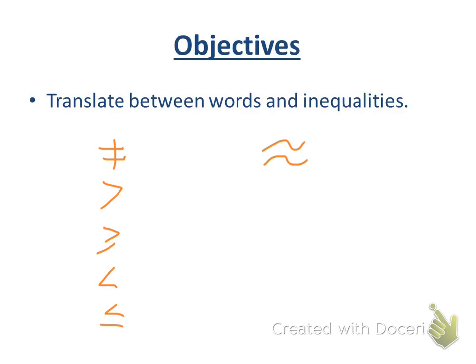So the inequality symbols that we're going to be working with, this is just going to be translating between words and inequality. What are some words that could be used to interpret that symbol? Not equal to, does not equal, can't equal. There's not a whole lot. It's pretty straightforward.